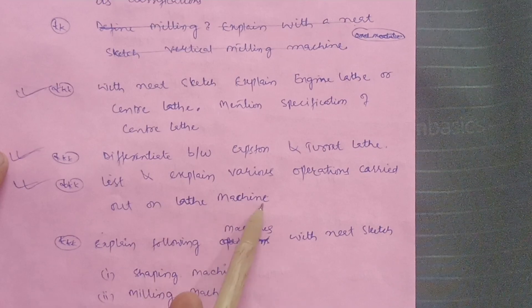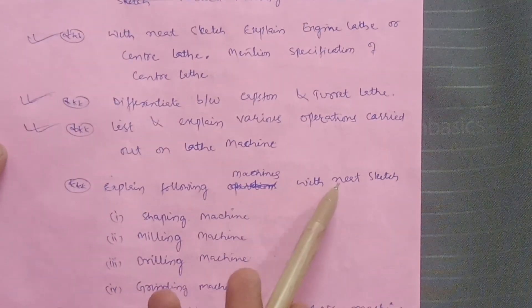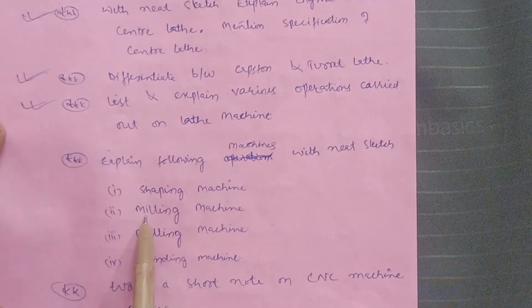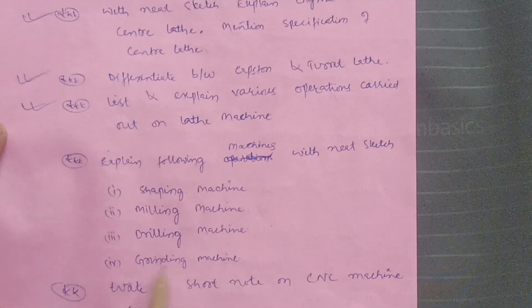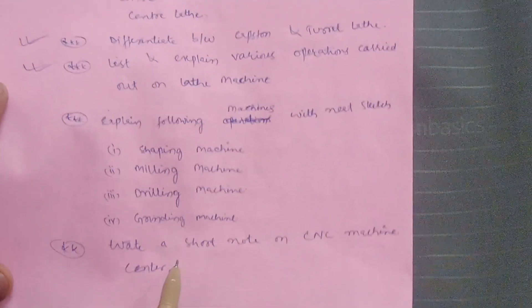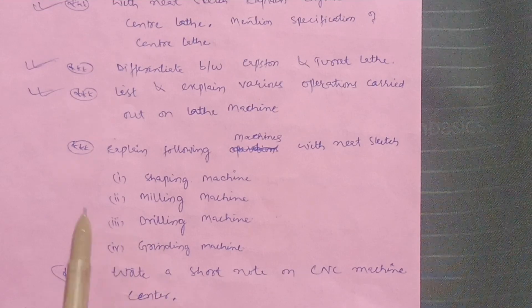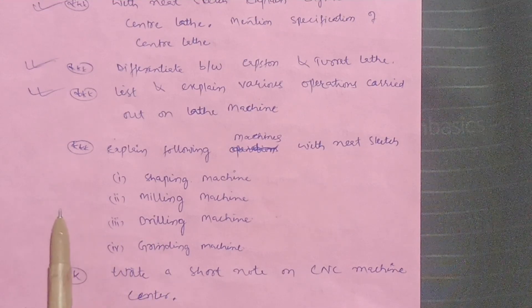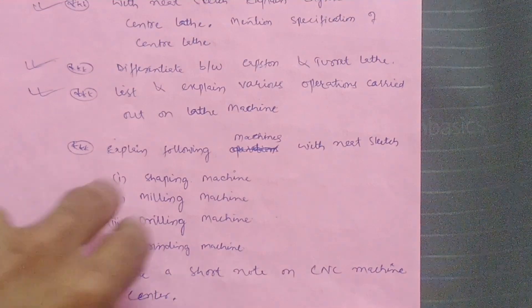Differentiate between capstan and turret lathe, list and explain various operations carried out on the lathe machine, and explain the following machines with neat sketches: shaping machine, milling machine, drilling machine, and grinding machine. Also write a short note on CNC machine center. This content from Module 1 is enough to cover at least 15 marks.